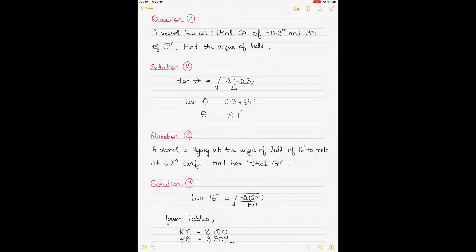Then we have question number two, which is a pretty straightforward question where you have the values given to you. A vessel has an initial GM of 0.3 meters negative and BM of 5 meters. All you have to do is find the angle of loll. It's a pretty straightforward question. Just put them in the formula here. So this formula is again minus 2 GM divided by BM.